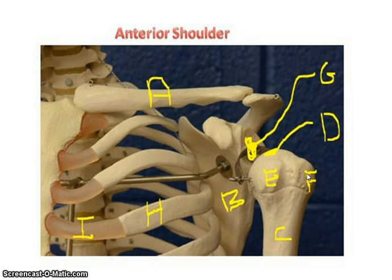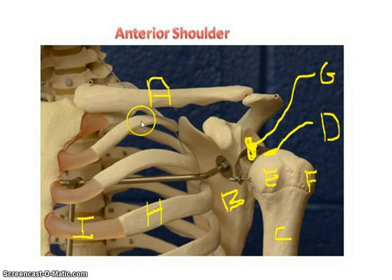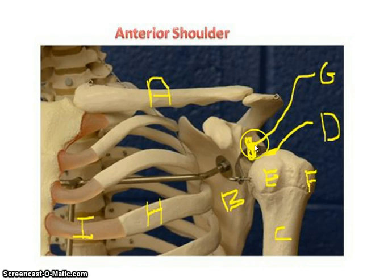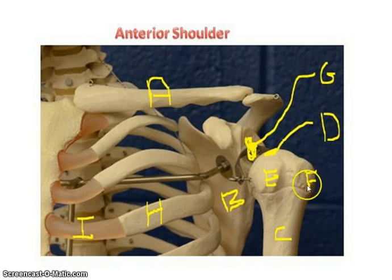If you put your hand straight down at the side of your body, you can actually feel that greater tubercle, and if you rotate your arm you can feel that greater tubercle go in and out. So real quickly: this is the clavicle, this is the scapula, this is the glenoid cavity where the head of the humerus is going to articulate, greater tubercle is on the lateral side, lesser tubercle is anterior, and this is the humerus.